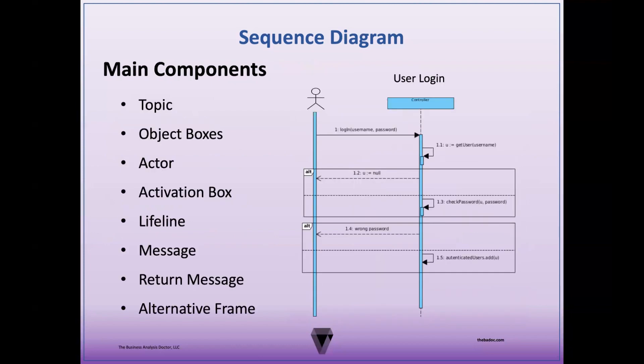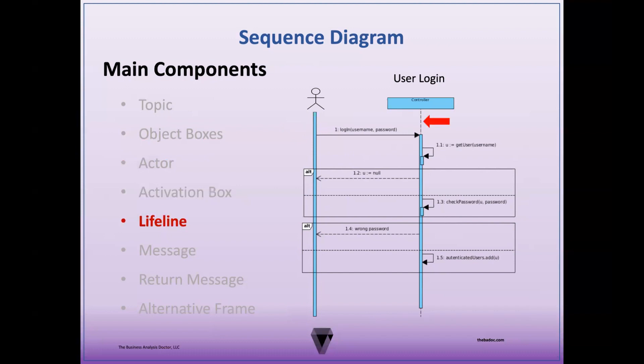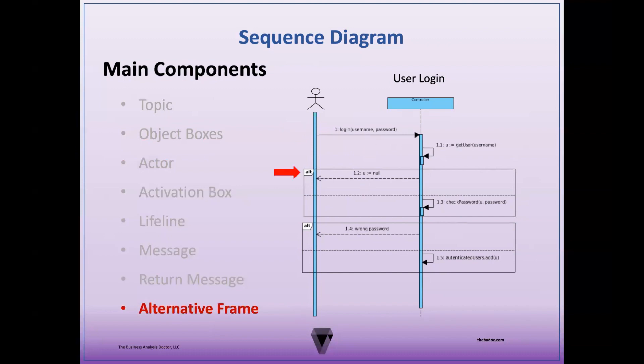Now let's look at the main components of the sequence diagram. This includes: topic, object boxes, actor, activation box, lifeline, message, return message, and alternative frame.